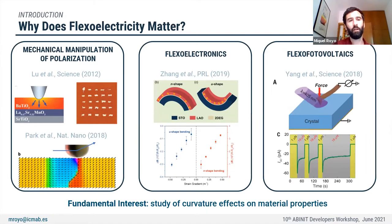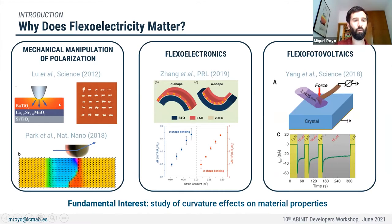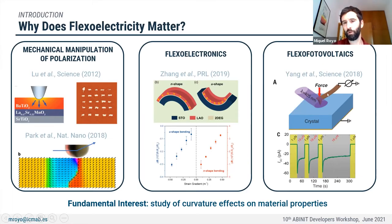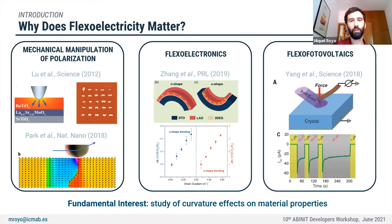The first applications of flexoelectricity were mainly devoted to finding cheaper replacements for piezoelectrics. However, more sophisticated applications have been reported over the years, often involving functionalities specific to this kind of electromechanical coupling — for example, the possibility of manipulating electric polarization by applying a strain gradient with the tip of a microscope, or modulating transport properties of a two-dimensional electron gas at a heterostructure interface by bending, or the large increase in photocurrent observed in photovoltaic devices when a strain gradient is applied. Despite these sophisticated applications, our understanding of the fundamentals of flexoelectricity is far from complete.